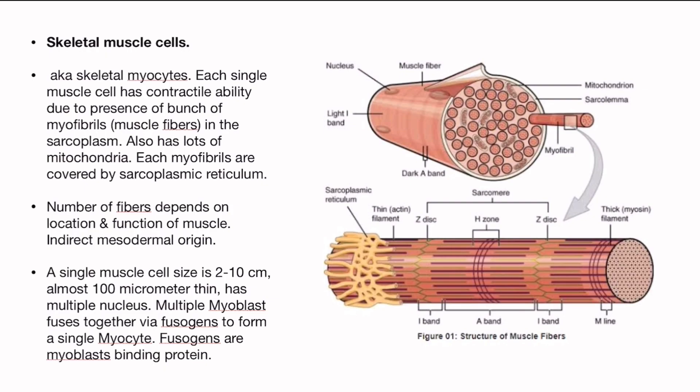Skeletal myocytes — each single muscle cell has contractile ability due to the presence of a bunch of myofibrils. Muscle fibers are also known as myofibrils. The sarcoplasm also has lots of mitochondria. Each myofibril is covered by the sarcoplasmic reticulum, as you can see in this photo.